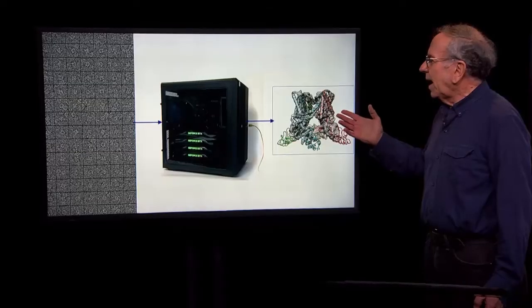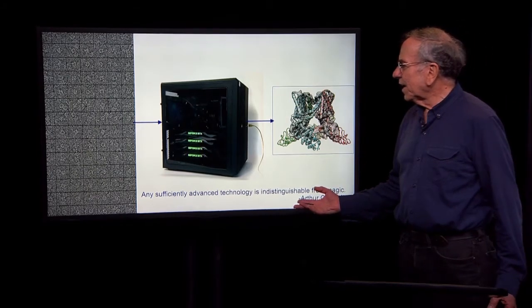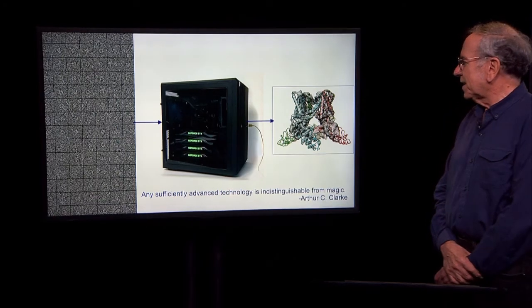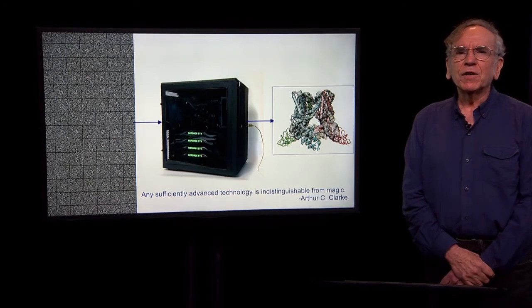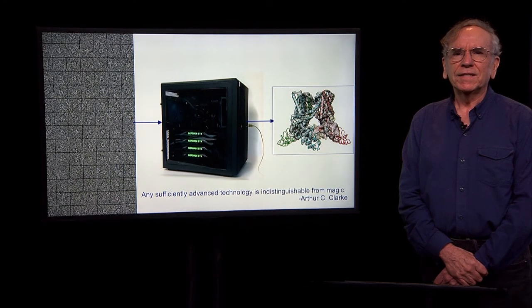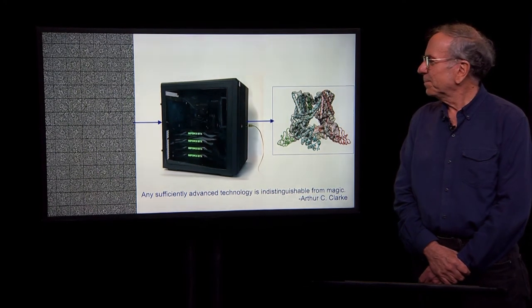And the output of this is a density map that can be used for obtaining an atomic structure. Now, I'm still just amazed that this works. And I like this quote from Arthur C. Clarke, any sufficiently advanced technology is indistinguishable from magic. And I have to say that this whole process still seems magical to me.